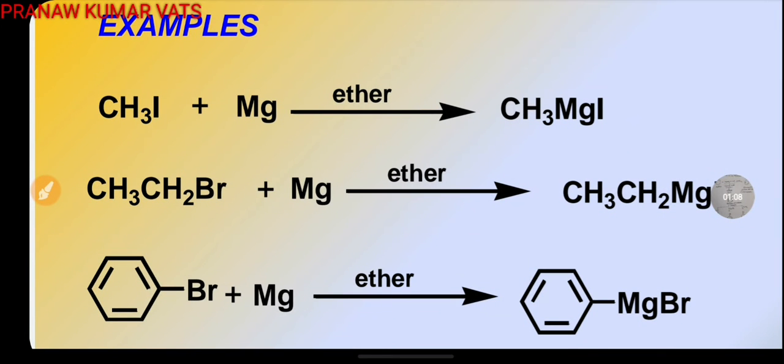Here are some examples: CH3I when reacts with Mg in presence of ether gives CH3MgI. Similarly, CH3CH2Br reacts with Mg to give CH3CH2MgBr. When bromobenzene reacts with magnesium in the presence of ether, it gives C6H5MgBr, that is phenyl magnesium bromide.